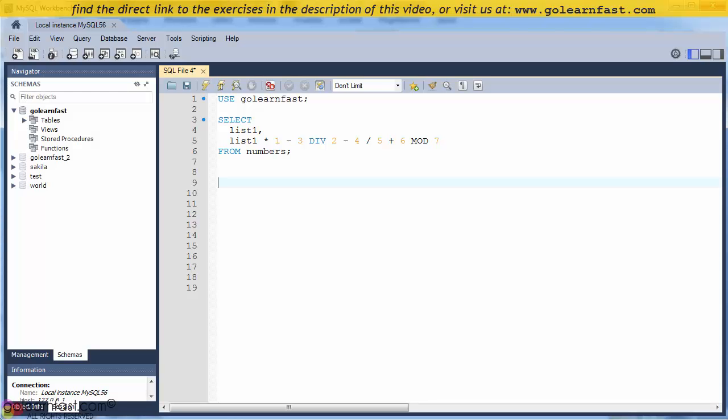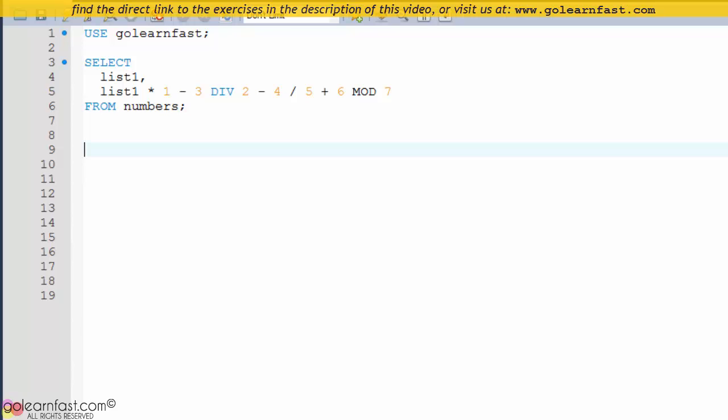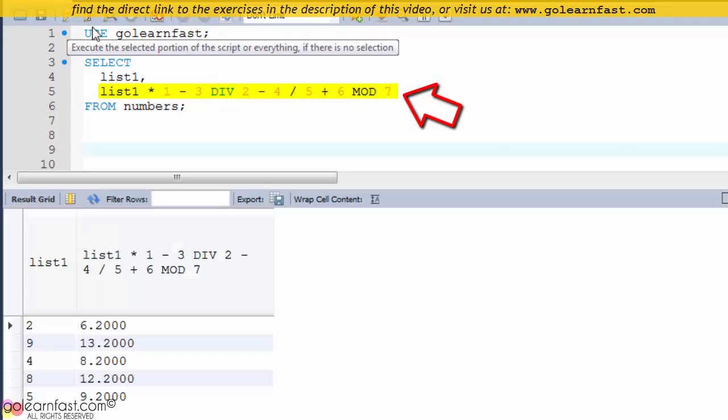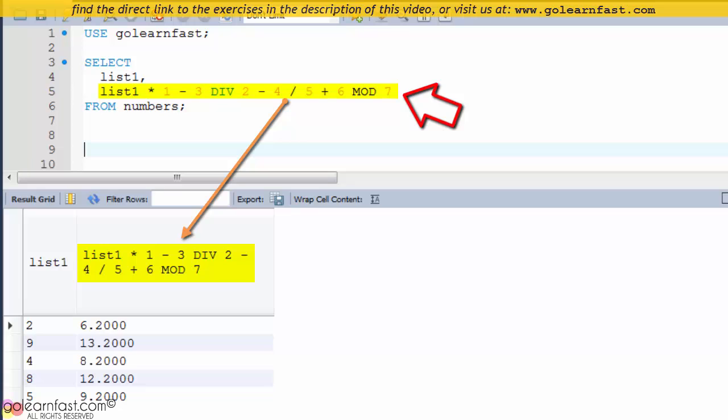By default, a column in the result set is given the same name as the column in the base table. If the column is based on a calculated value, MySQL uses the expression for the calculated value as the column name.